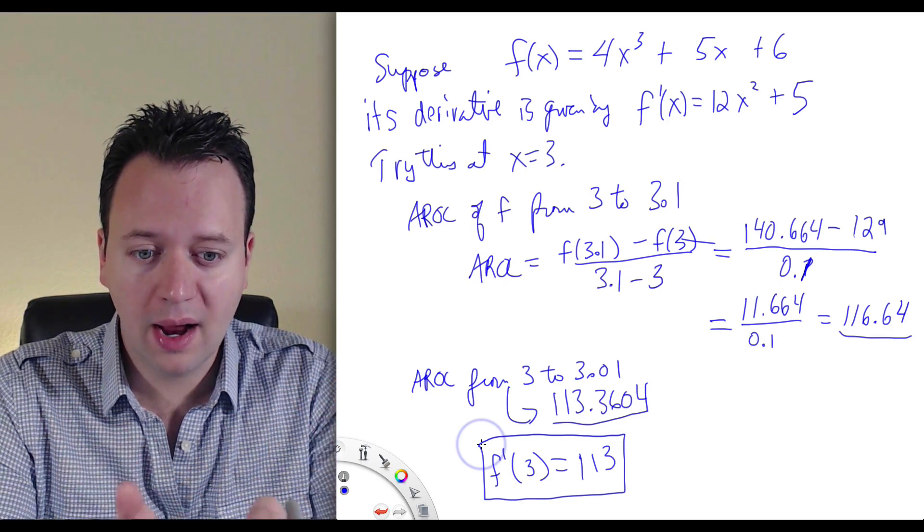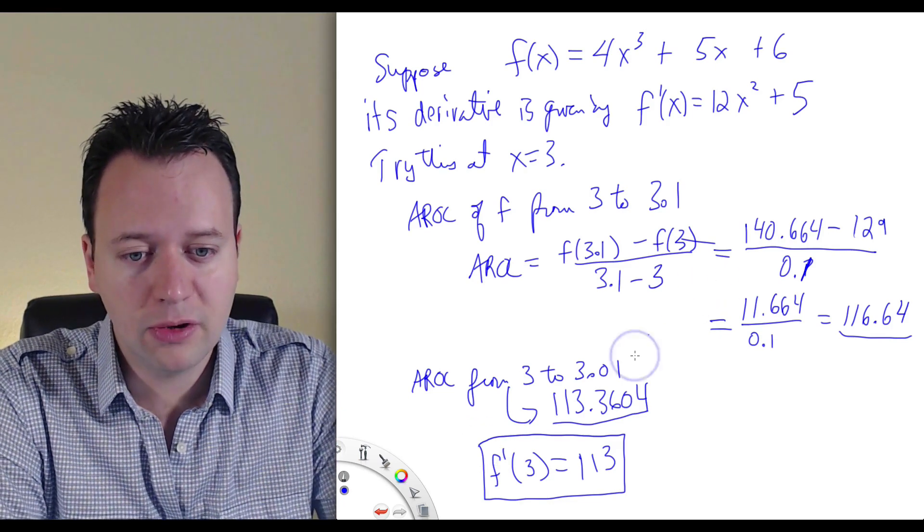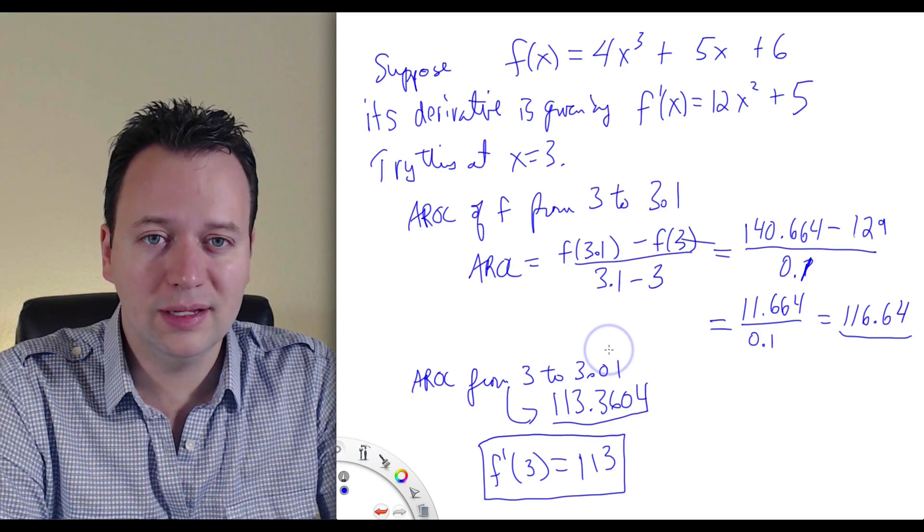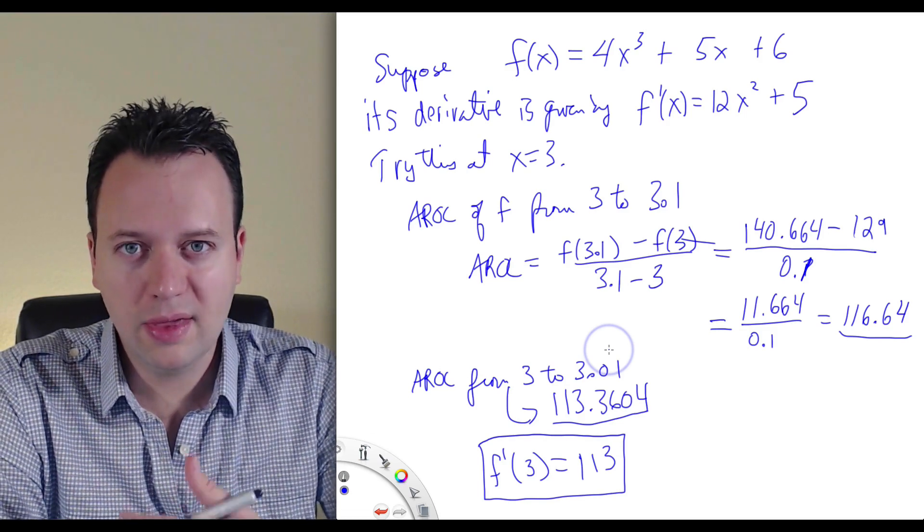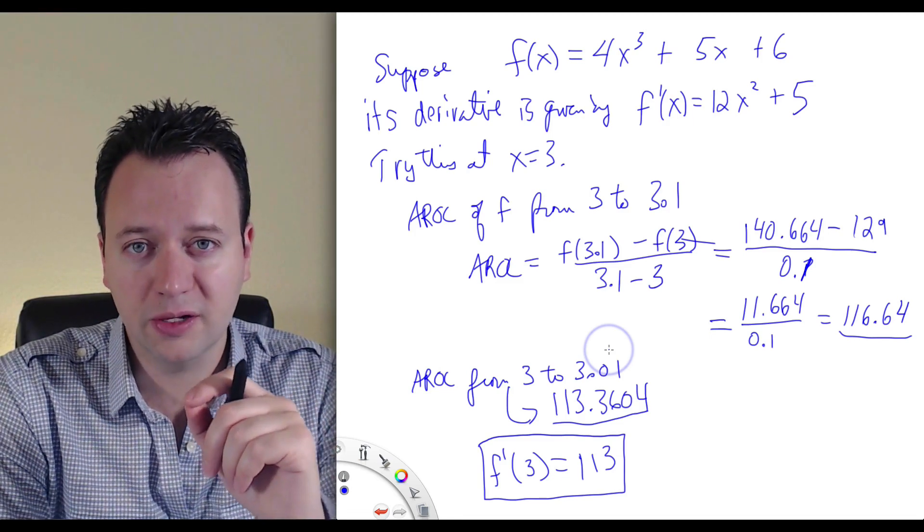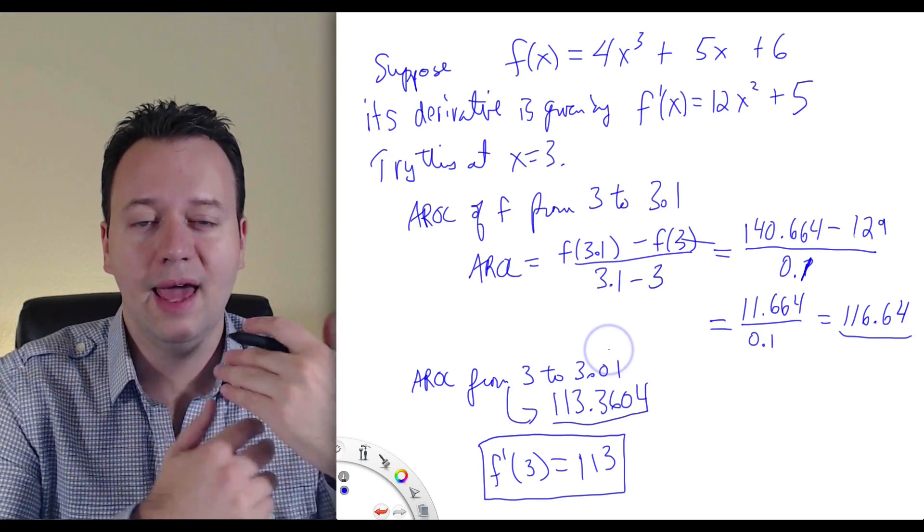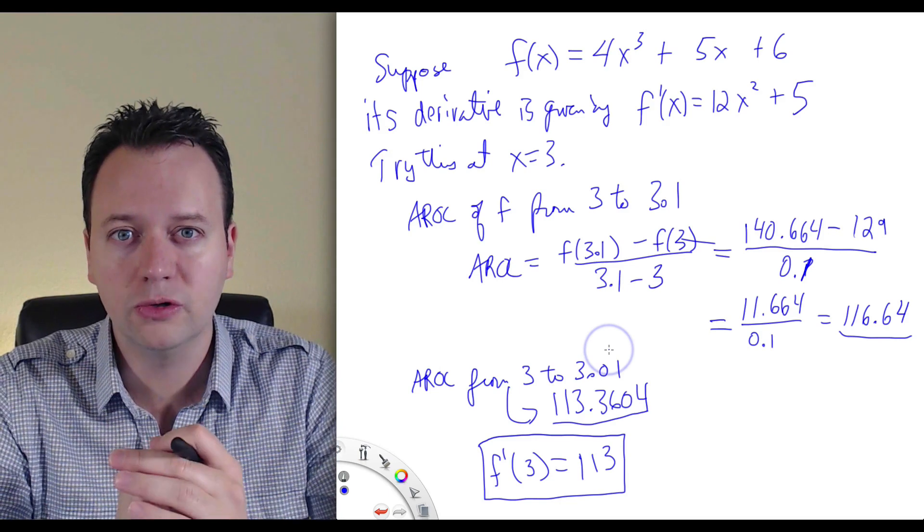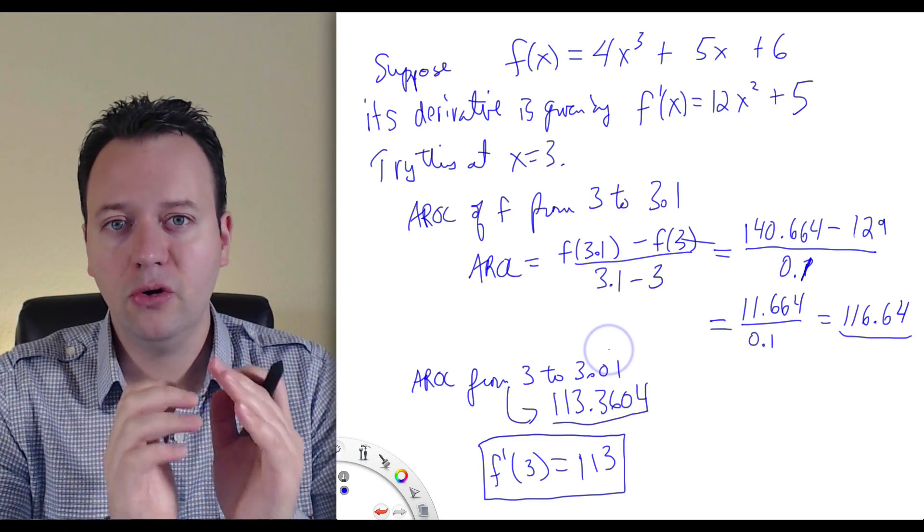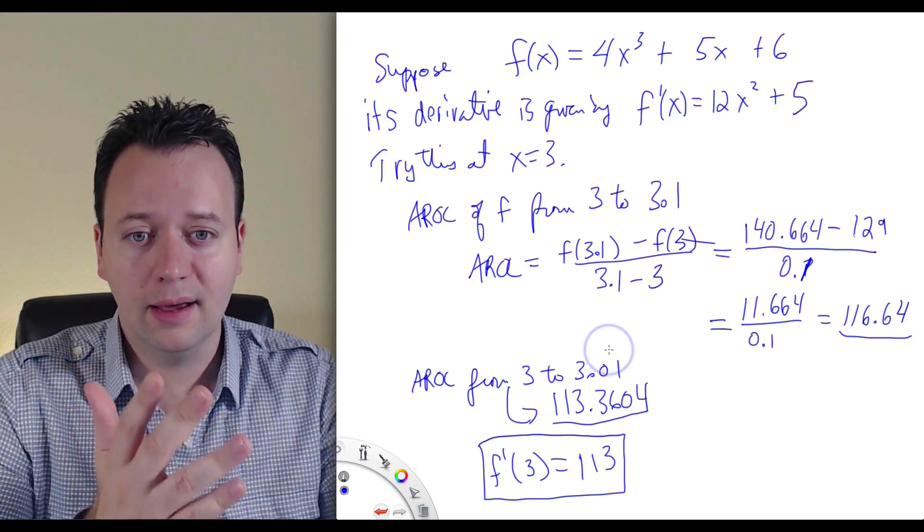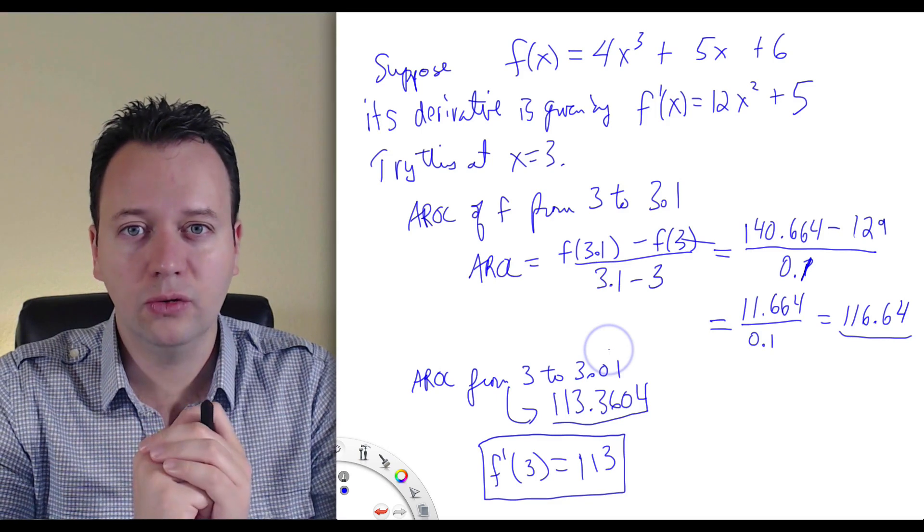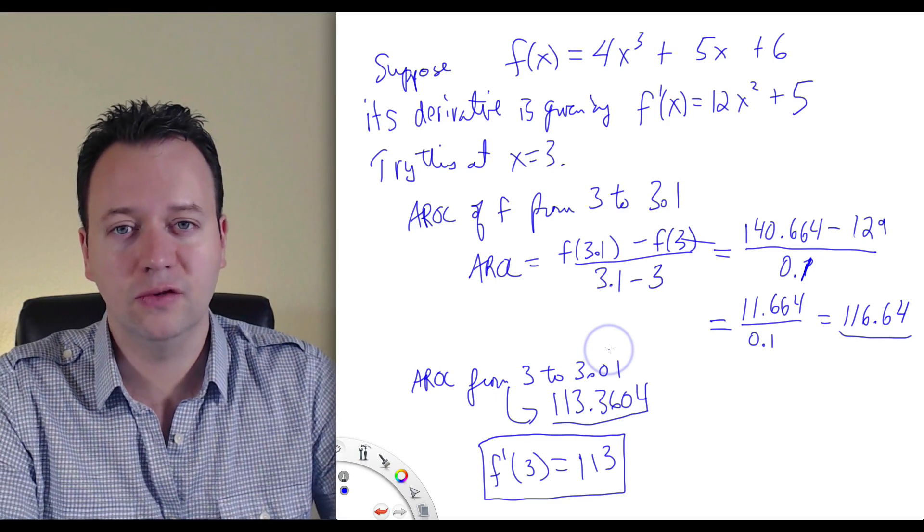You can say, well, is this really correct? We can even do a better approximation. We can compute the average rate of change between 3 and 3.001, and then between 3 and 3.0001. And as we do that, we'll see that the average rate of change is leveling out to the value 113. So as you choose that interval to be smaller and smaller and smaller, the average rate of change is becoming closer and closer and closer to simply the number 113. And that's exactly what the derivative does for you. Instead of computing the instantaneous rate of change by a number of successive approximations of the average rate of change, you can just take the derivative and evaluate it at a point and you know the instantaneous rate of change of any function.